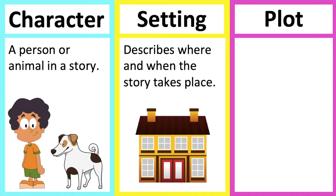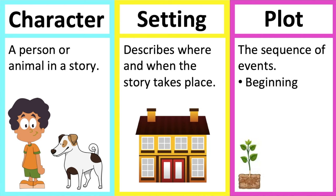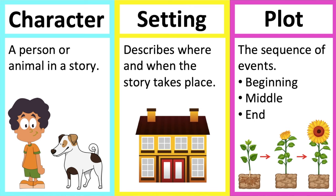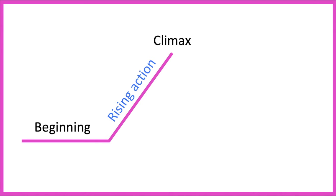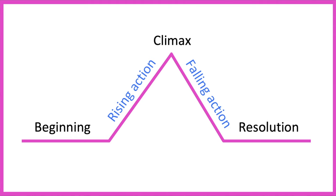Plot. The plot is the sequence in which things happen. These are called events. This includes a beginning, middle and end. The plot consists of the beginning, rising action, climax, falling action and resolution.